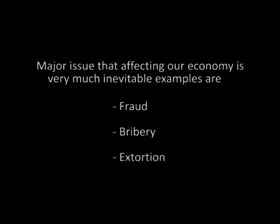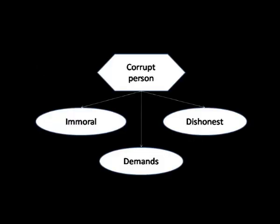In India, corruption is a major issue affecting our economy and is very much inevitable. A few examples of corrupt behavior are fraud, bribery, extortion, embezzlement, and nepotism. A corrupt person is immoral, dishonest, and demands a favor if the work has to be accomplished on time. The illegal favor done to a person in order to get work accomplished is called a bribe.